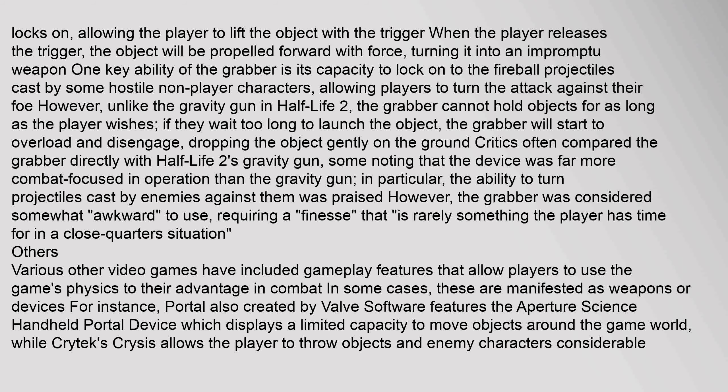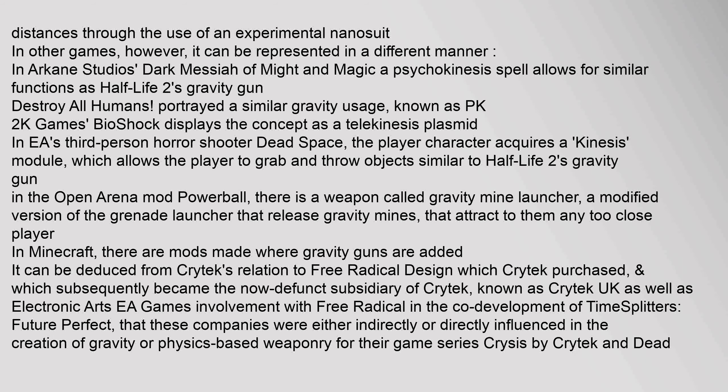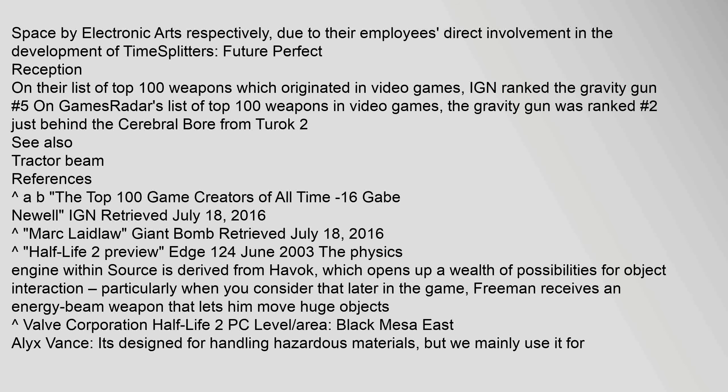Various other video games have included gameplay features that allow players to use the game's physics to their advantage in combat. In some cases, these are manifested as weapons or devices. For instance, Portal, also created by Valve Software, features the Aperture Science handheld portal device, which displays a limited capacity to move objects around the game world, while Crytek's Crysis allows the player to throw objects and enemy characters considerable distances through the use of an experimental nanosuit. On IGN's list of top 100 weapons originating in video games, the gravity gun was ranked number 5. On GamesRadar's list of top 100 weapons in video games, the gravity gun was ranked number 2, just behind the cerebral bore from Turok 2.